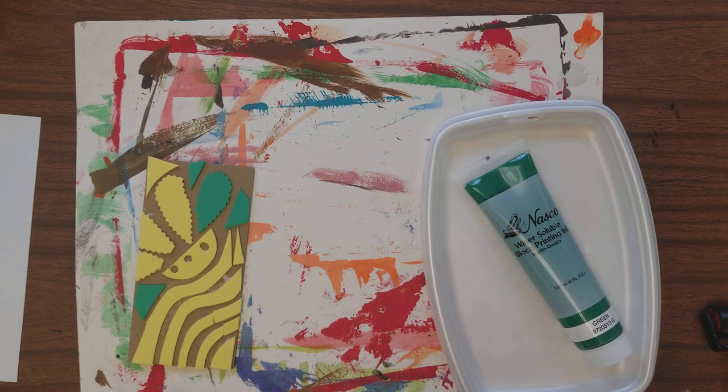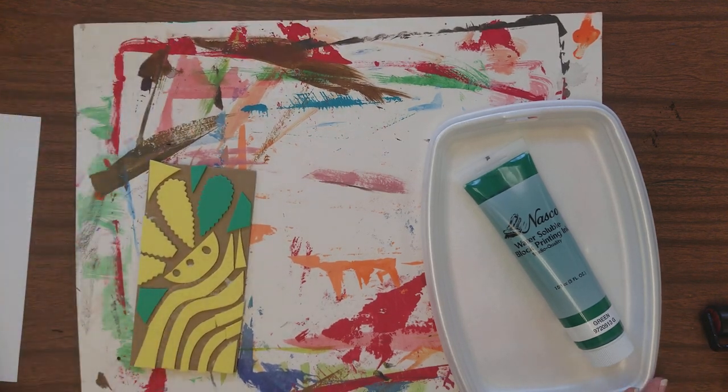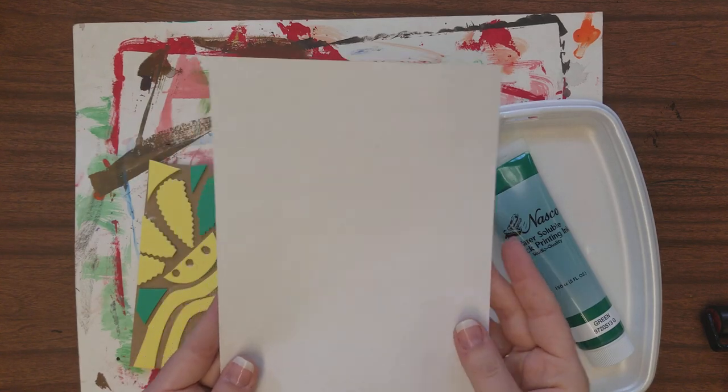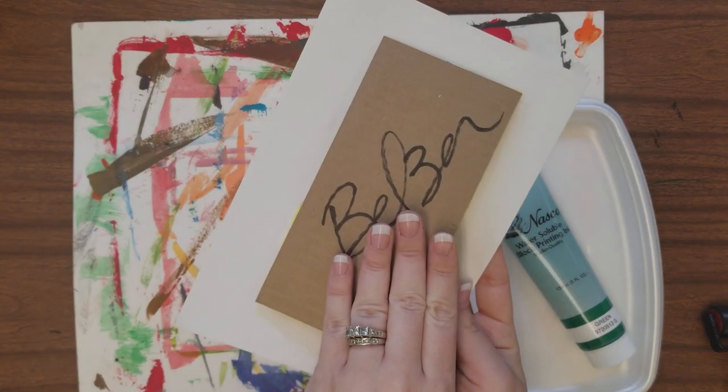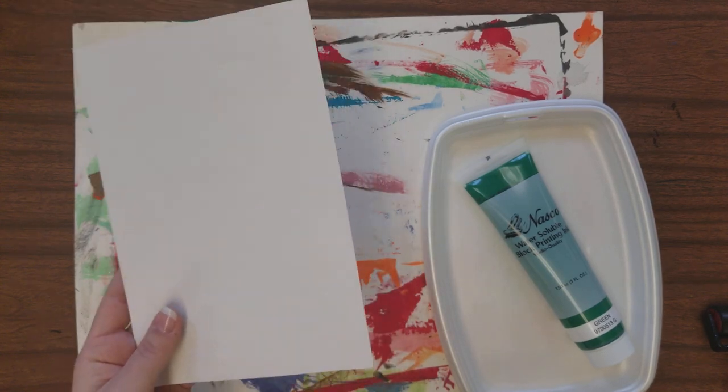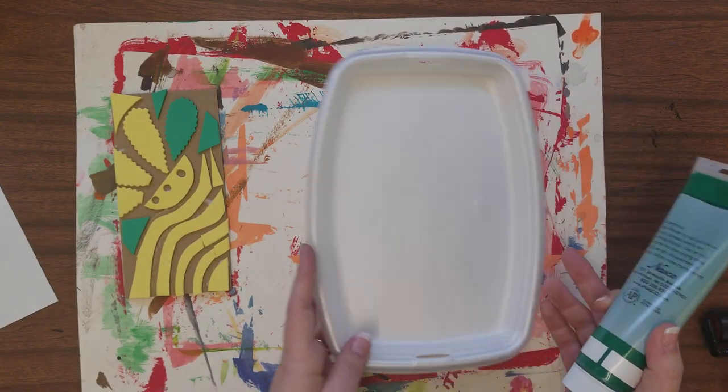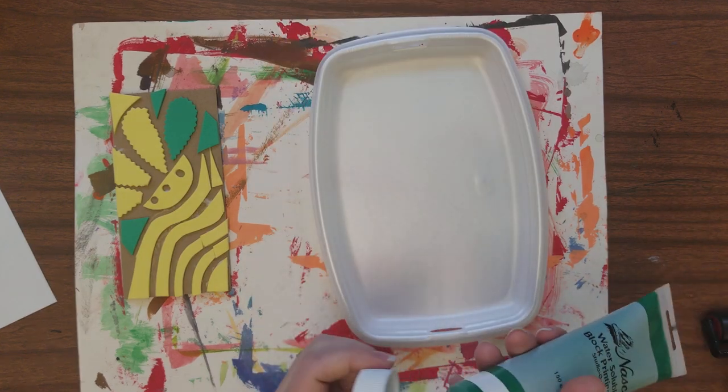For printing day, what you're going to do is set up your workspace again. This time you'll need a placemat. You'll need your clean paper that you'll be printing your design onto. It's good to write your name on these first because once it's wet, you tend to forget. So, write your name on those. And then we'll have a section set up for printing.